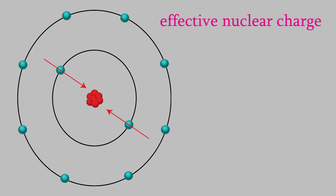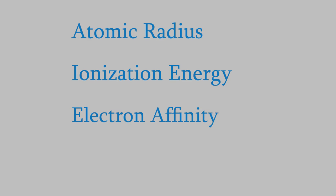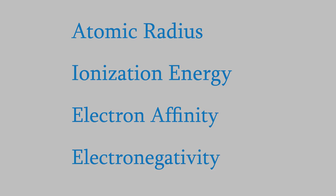The effective nuclear charges are also important for many properties of atoms and ions. The effective nuclear charge that the valence electrons feel has a huge impact on many properties of atoms and ions. We'll talk about four of those properties: the atomic radius, the ionization energy, the electron affinity, and the electronegativity. We'll talk about the first one, atomic radius, in this video, and the others in the next two videos.